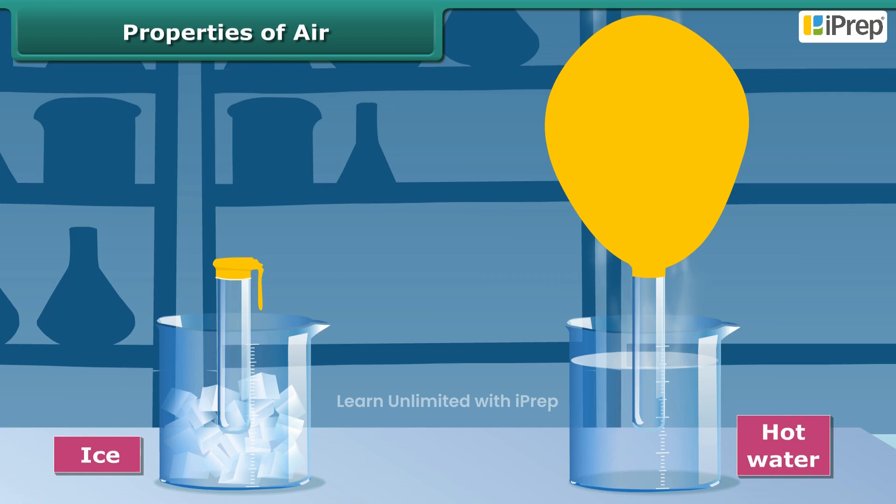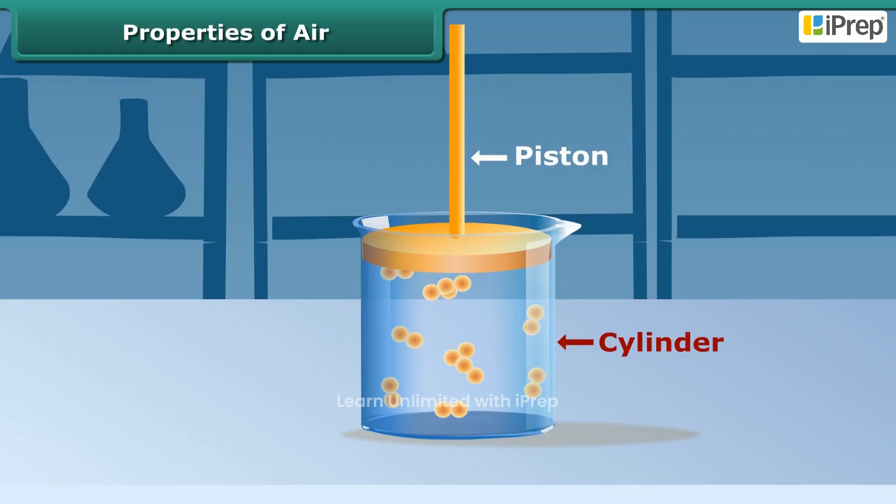When air gets warm, it expands and rises, which inflates the balloon. On the other hand, cool air contracts, causing the other balloon to shrink. This shows that air exerts pressure. Take a cylinder fitted with a piston.